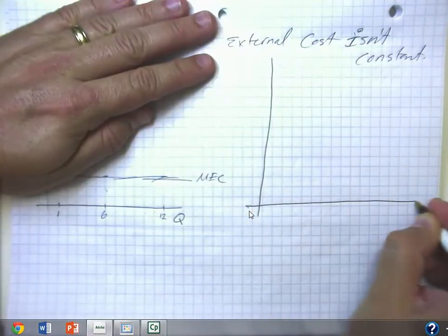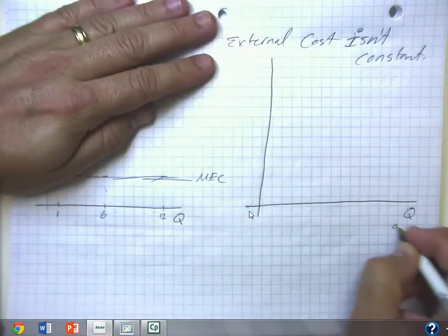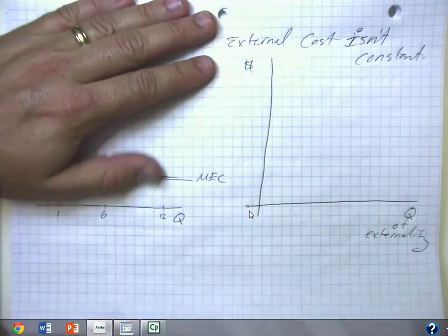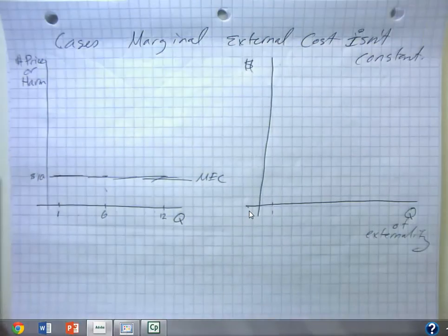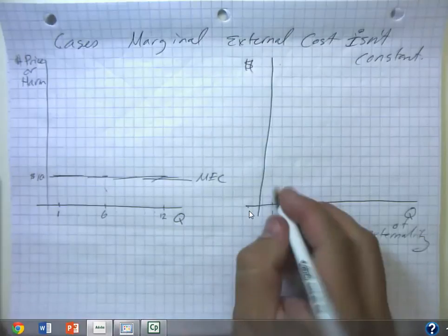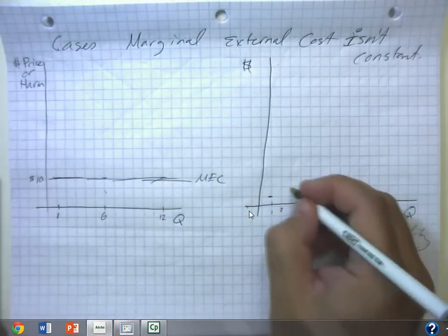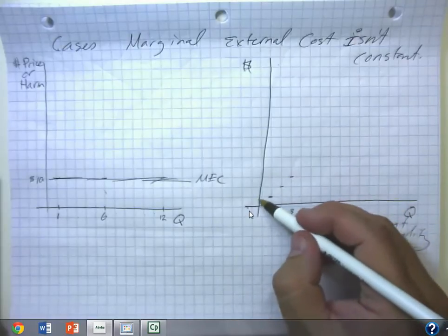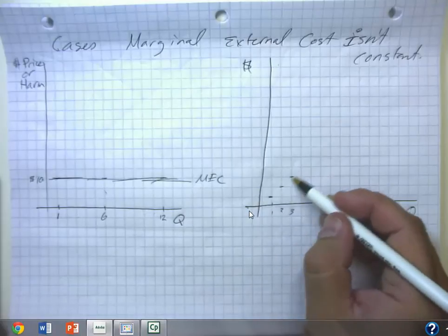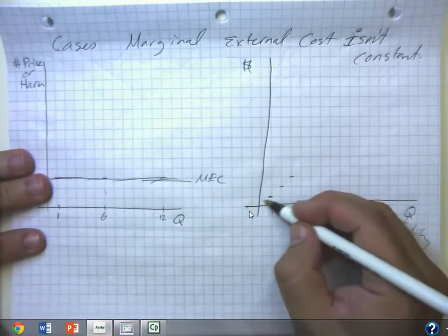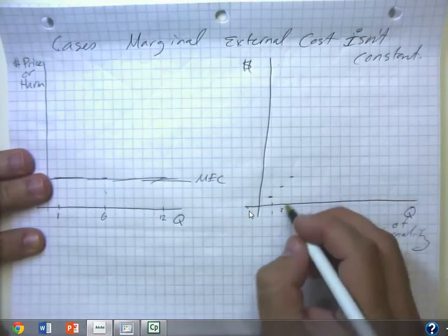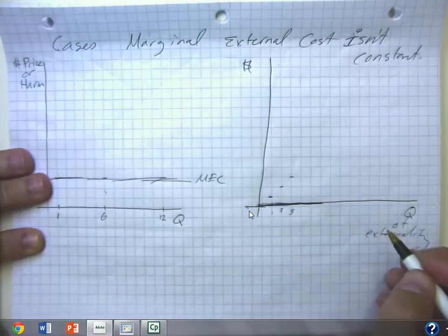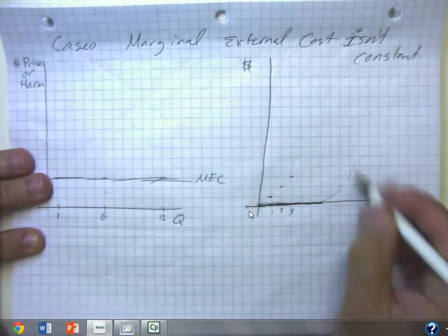But a lot of things out there — quantity of the externality on one axis and dollars on the other — it might be that the first little bit of manure or fertilizer or whatever we put in the river doesn't do very much harm. The 2nd unit does more harm, and the 3rd unit does even more harm, and so on. This is a case where it's relatively painless to tolerate small amounts, but as we get to more saturation of the pollution, things get more complicated. It might even be that there's a safe threshold where the harms are zero for a while, and then it shoots up rapidly.